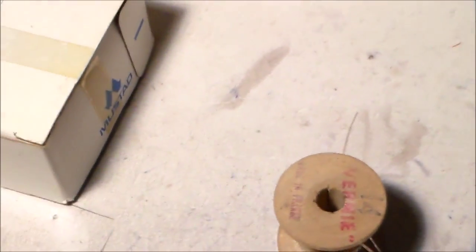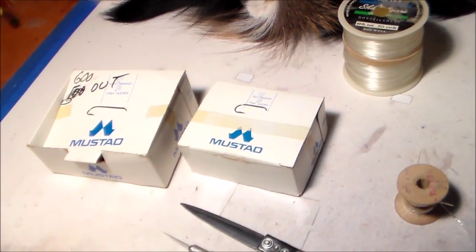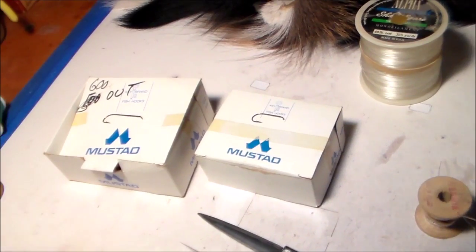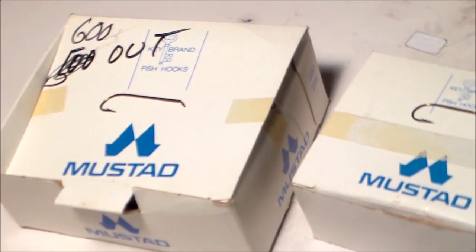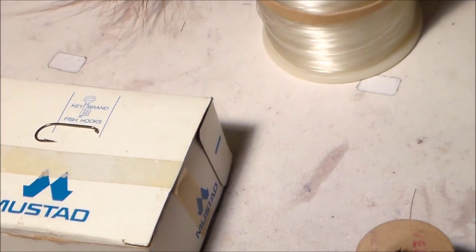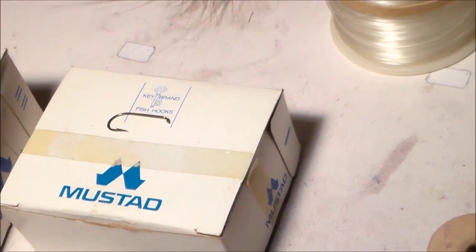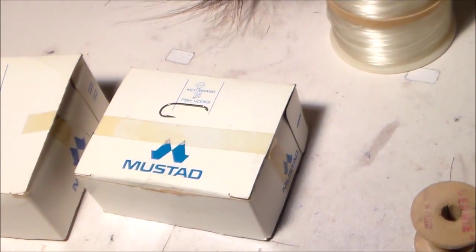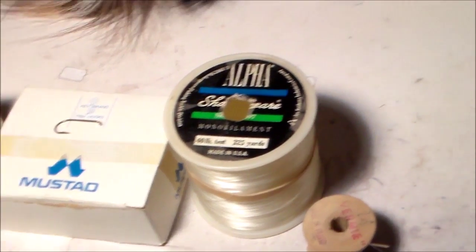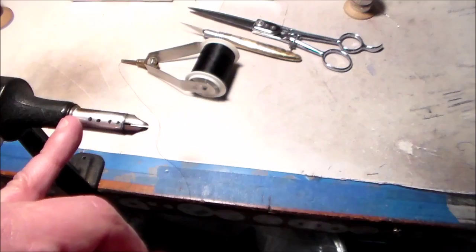Our initial hook is going to be a Mustad 3665A size 4, and then for the trailing hook it'll be a Mustad 94840 also in a size 4. We'll use monofilament, this is just an old Shakespeare 40 pound test.